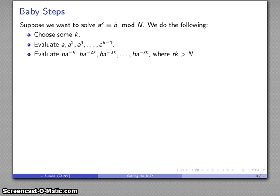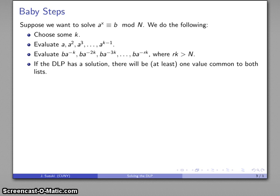I'm also going to evaluate the powers times B: B times A to the minus k, B times A to the minus 2k, and so on, all the way up to B times A to the minus Rk, where I will stop when Rk is greater than N. And then what I'm going to do is look for a value that's common to both lists. If the discrete logarithm problem has a solution, there will be at least one value that does appear on both lists.